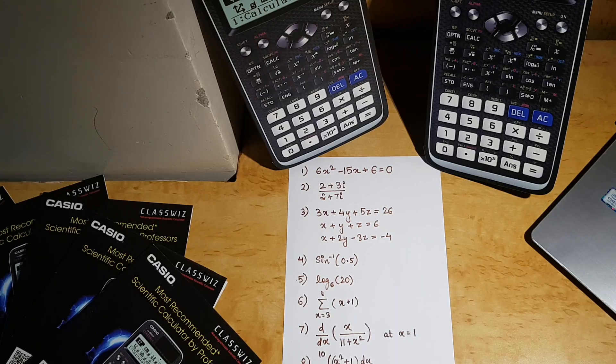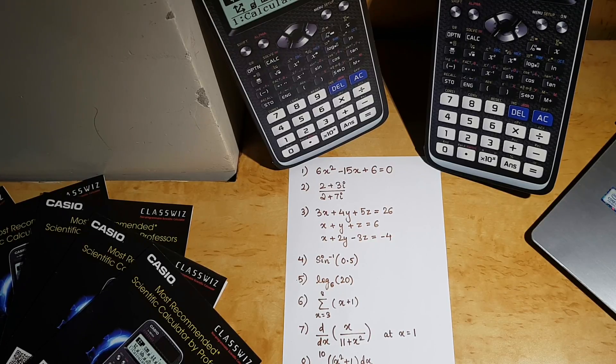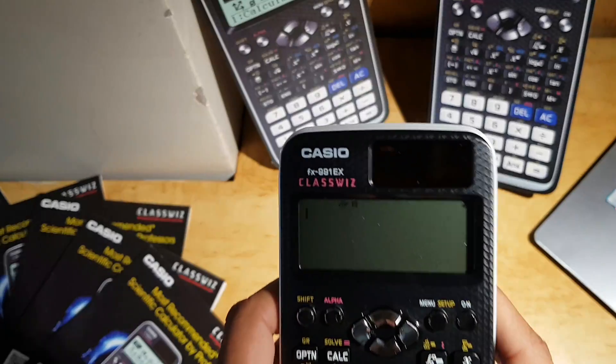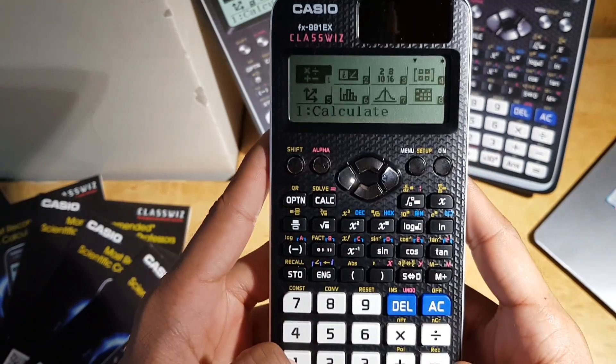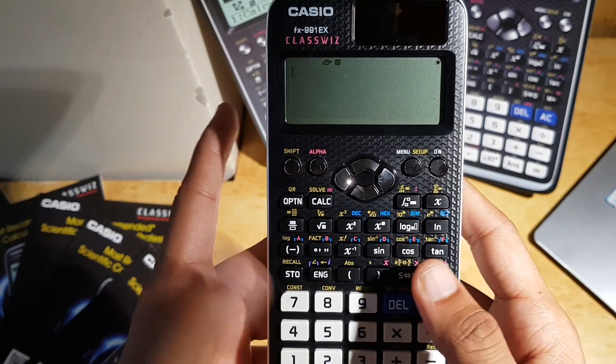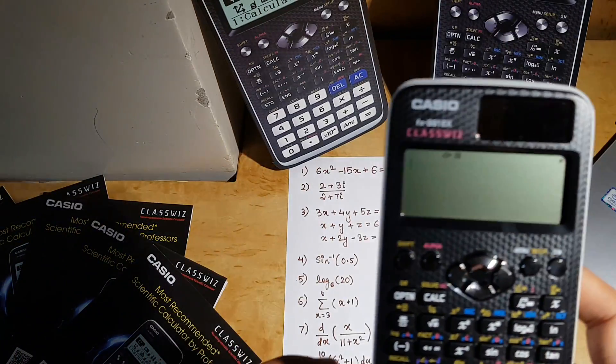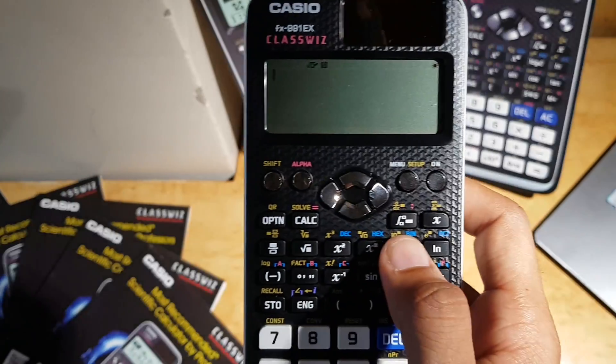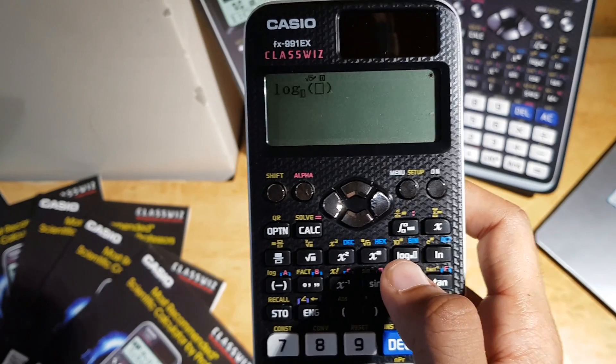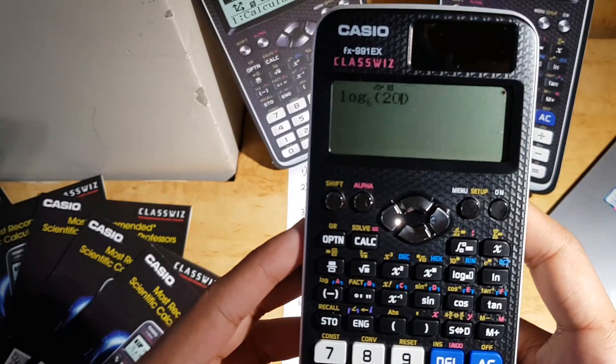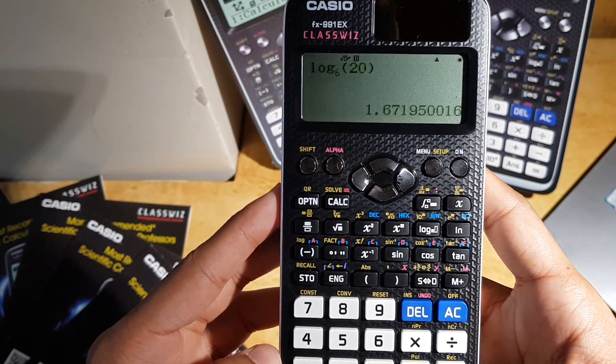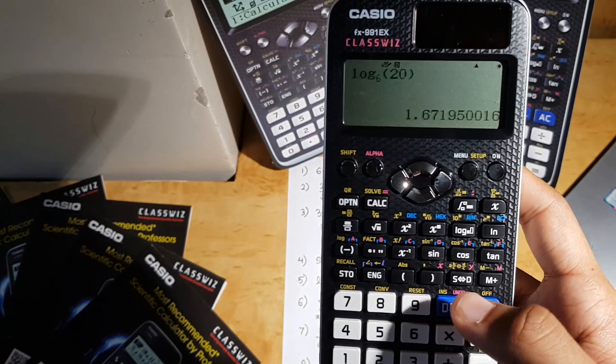Moving on next to the logarithmic question. The question is log 20 with the base of 6. I'm back to the main menu using this main menu and then selecting 1, coming back to the calculator option. I'm using this keyword here which is log, and then I select the base 6, move the cursor to 20 and then enter. That's the answer. Simple.